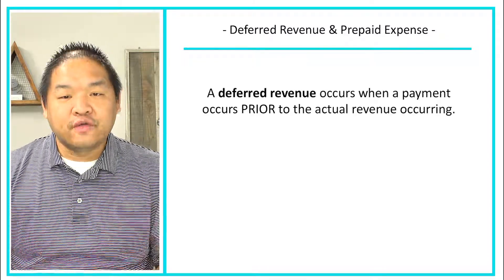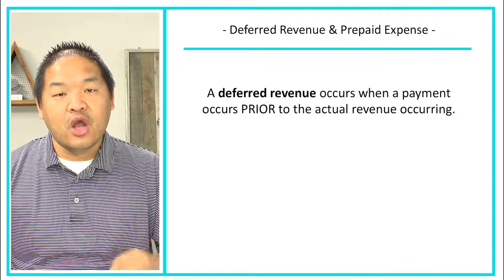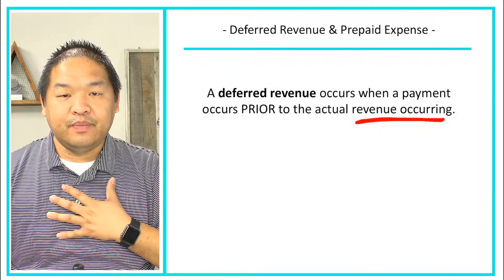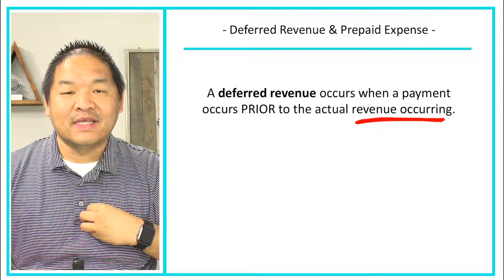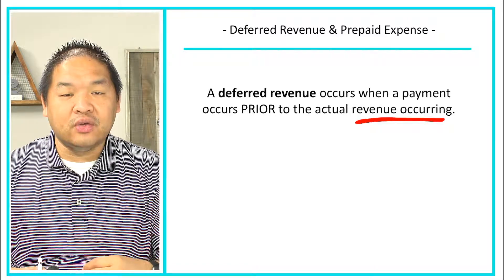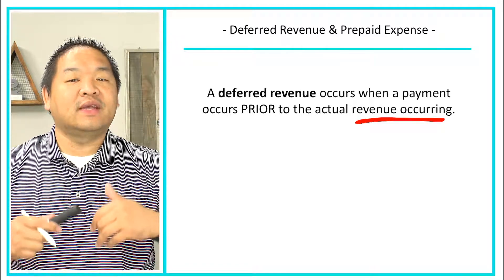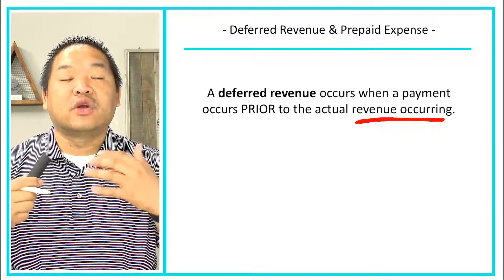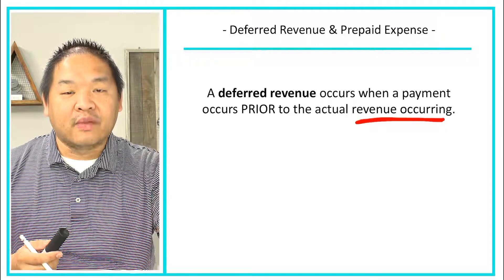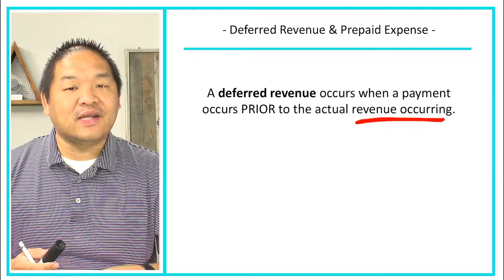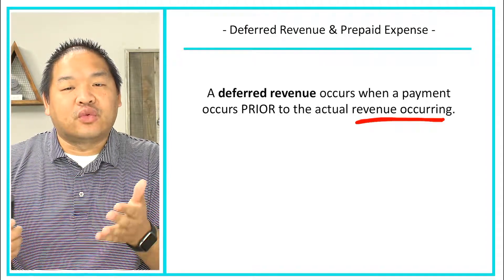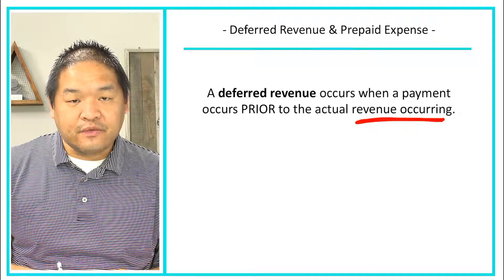What is a deferred revenue? A deferred revenue occurs when a payment occurs prior to the actual revenue occurring. Think of yourself as a company — you have a customer who pays you in advance of whatever you're supposed to do. Normally when you receive cash that would be revenue, but because you haven't performed a performance obligation, you can't consider it revenue yet. So we accept the cash but call it deferred revenue, and defer it until we actually perform that obligation.